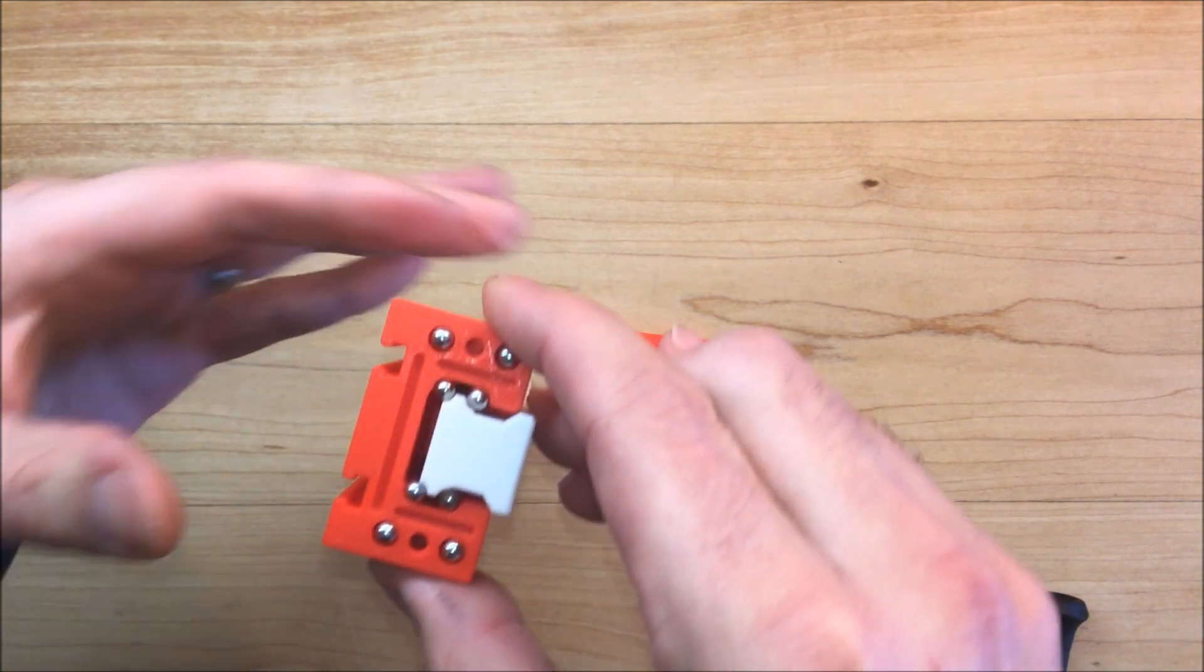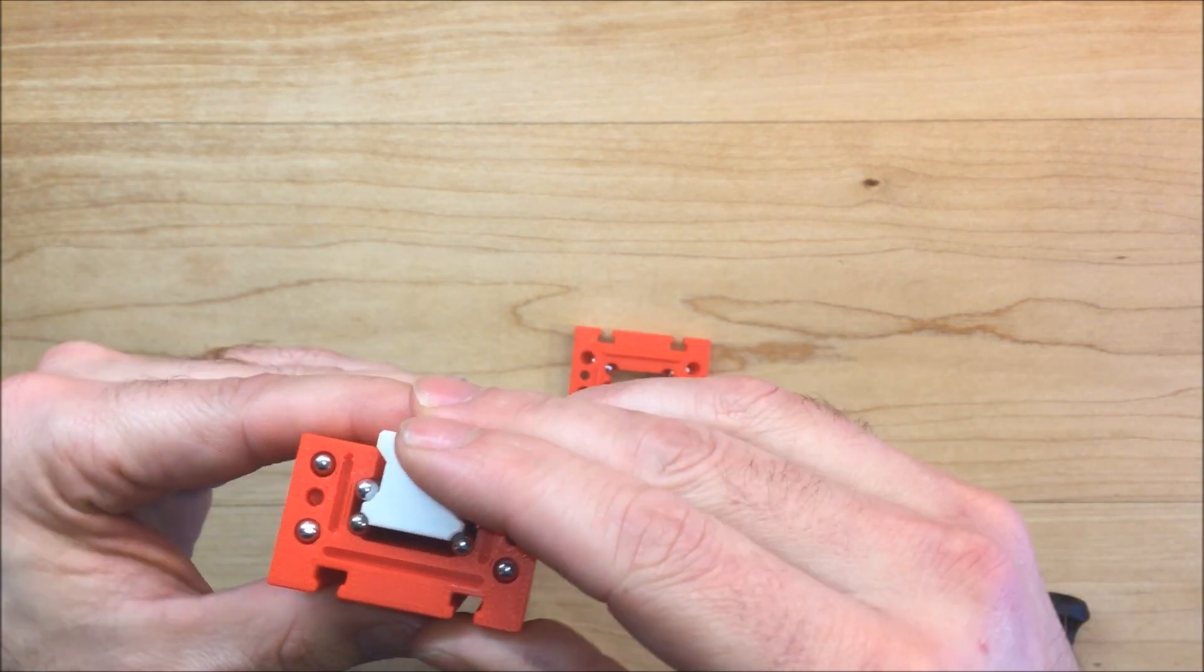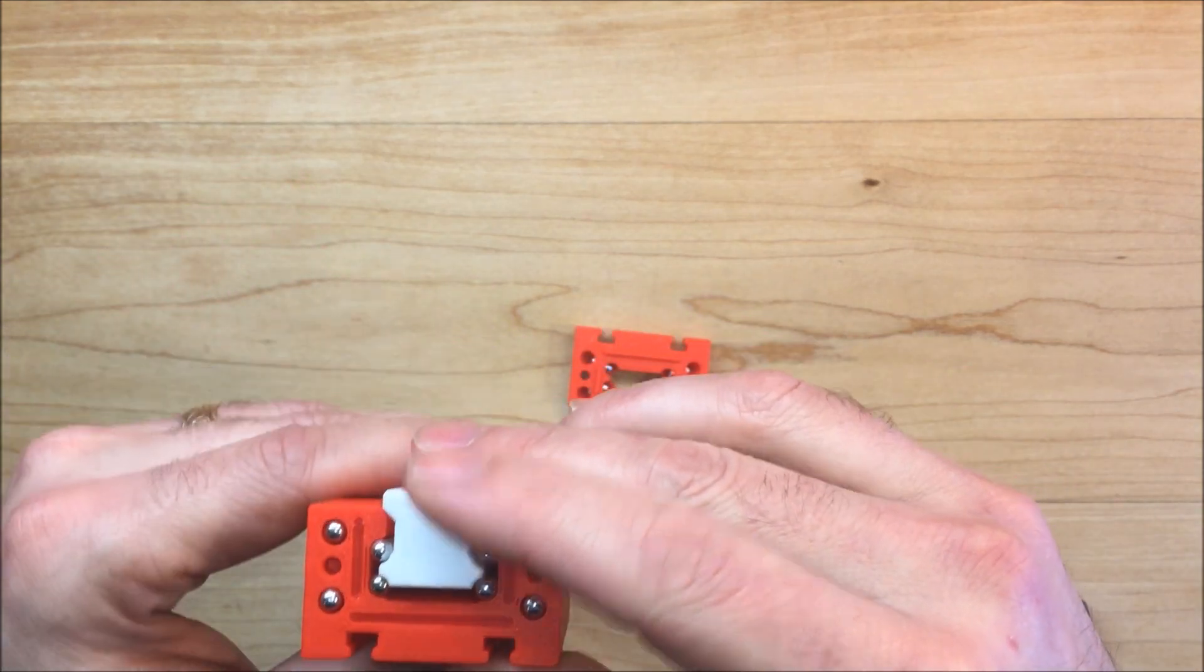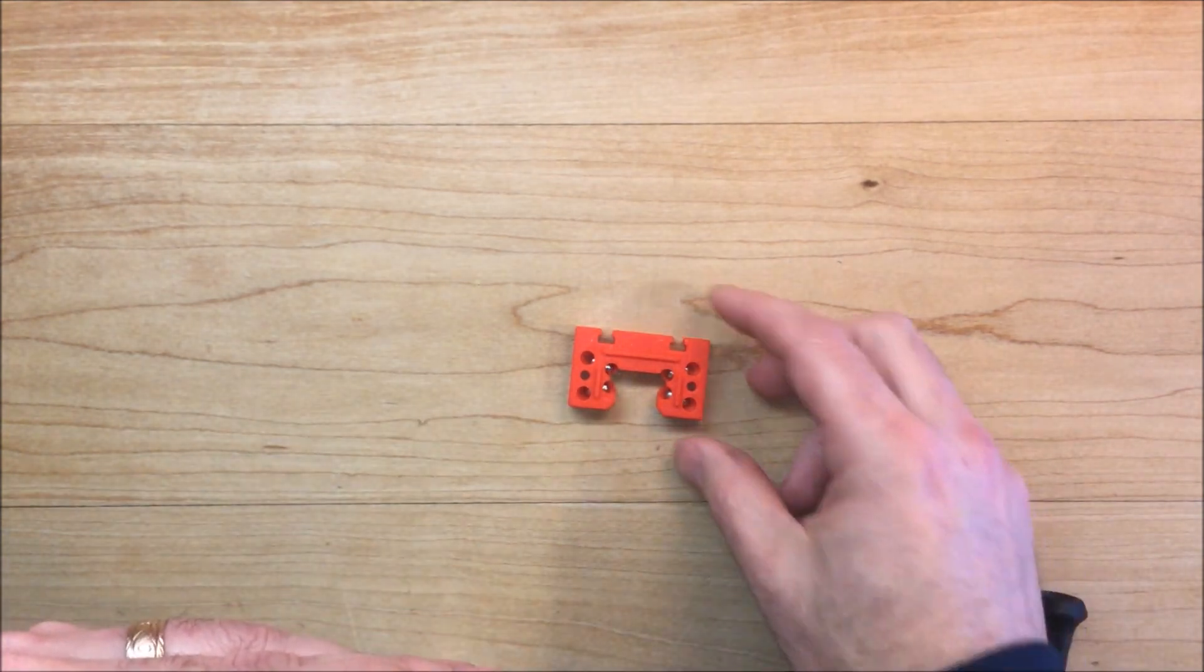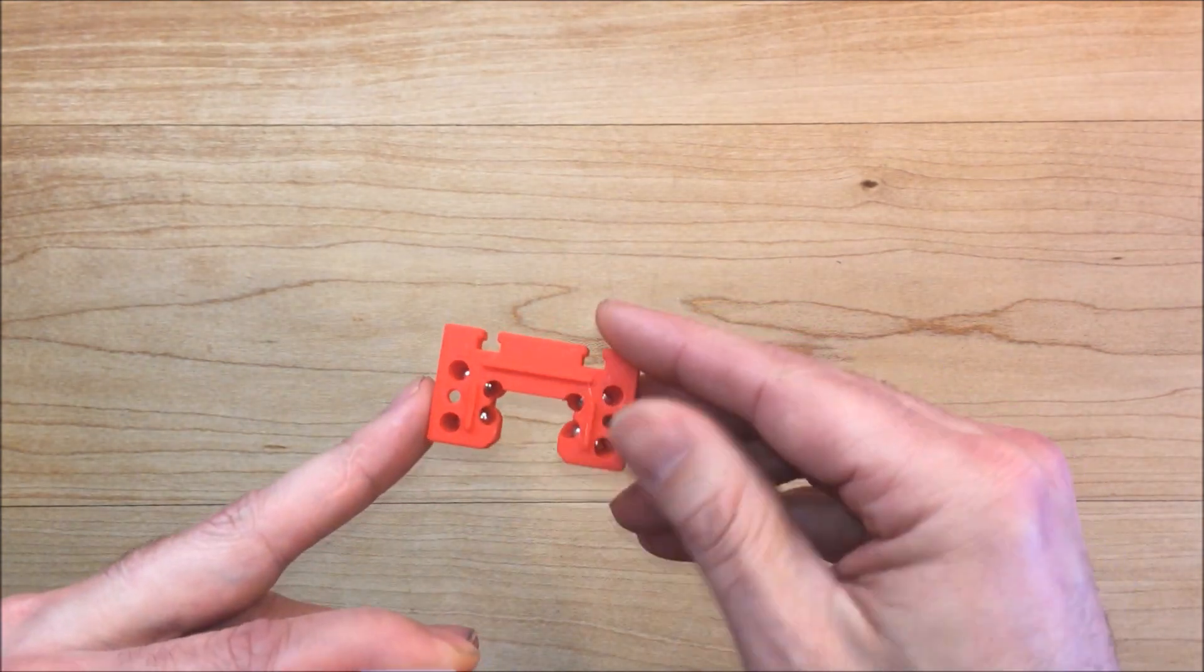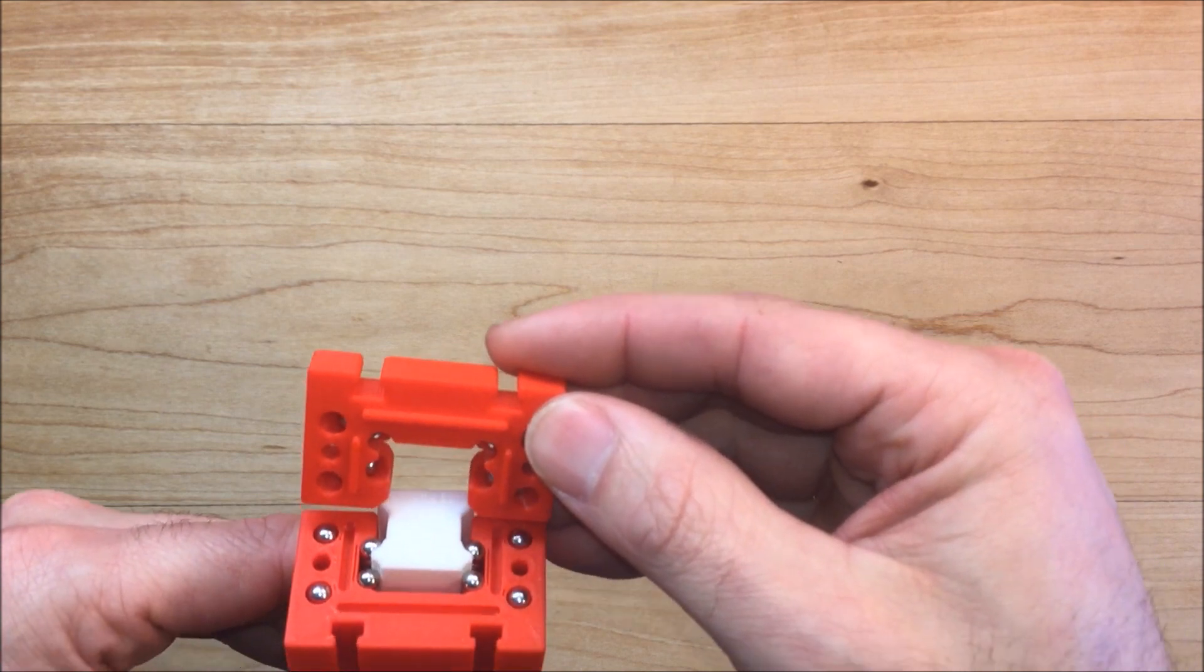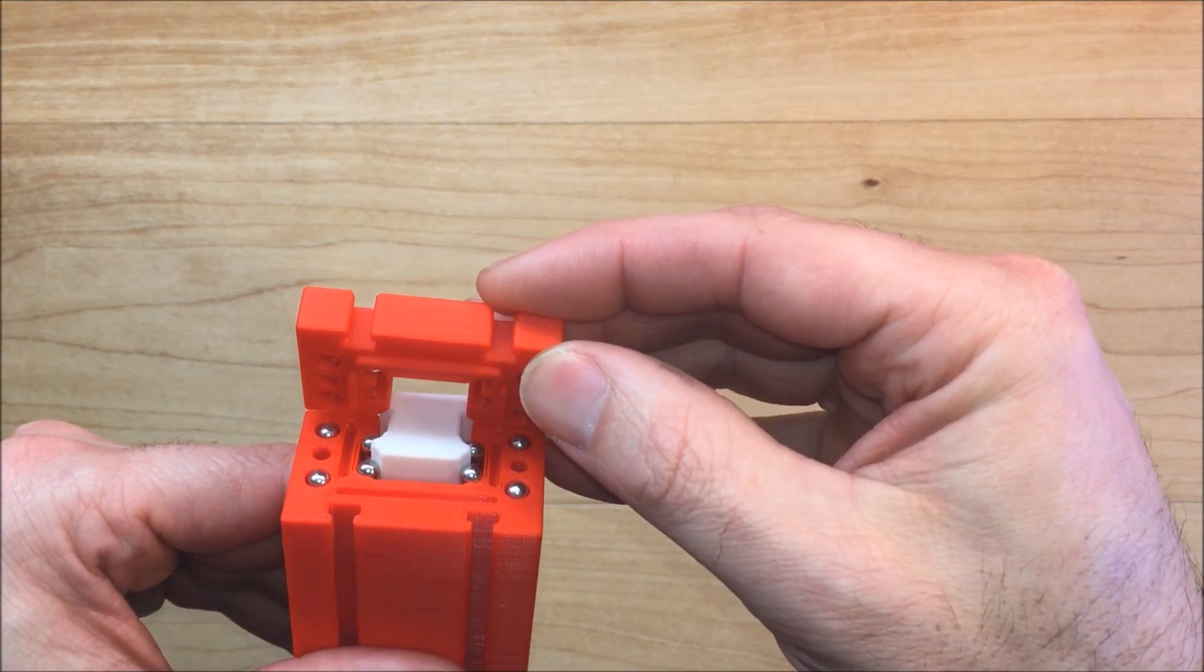Now this is the tricky part. Hopefully I'll get it right the first time. But what you need to do is put the cap on the carriage without the BBs falling out. So you want to tilt it just enough.